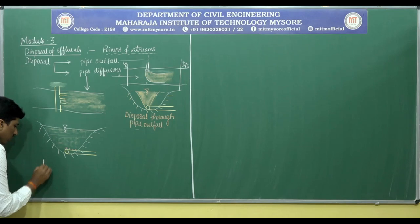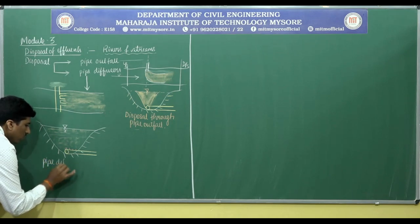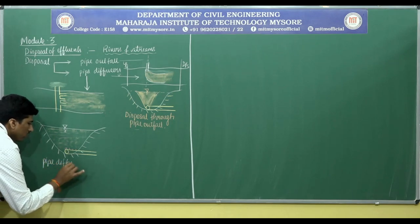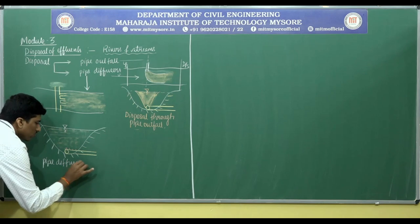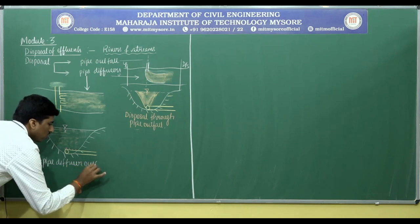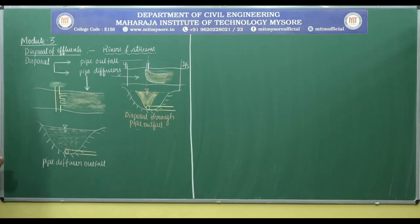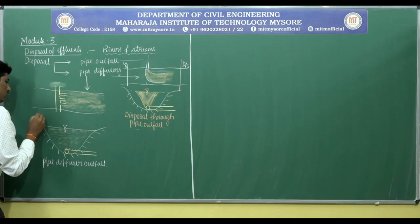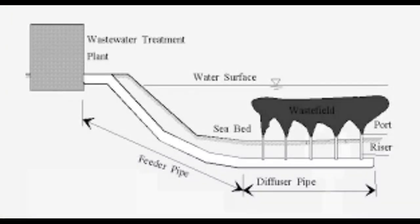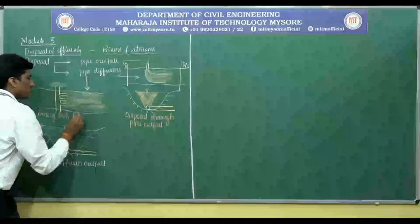We call it as a pipe diffuser outfall, which involves both mixing — both laterally as well as vertically.